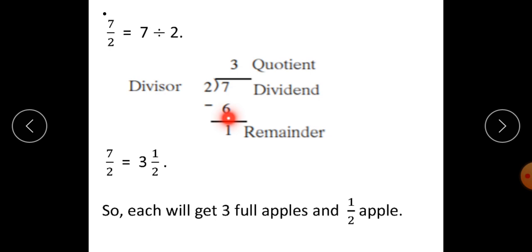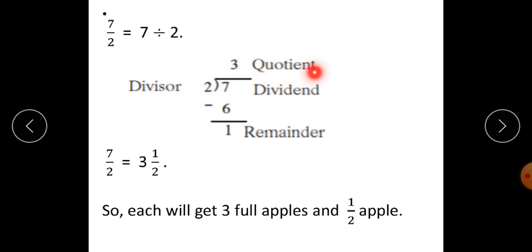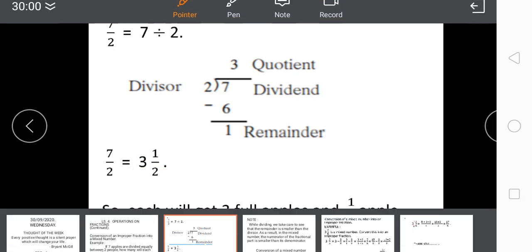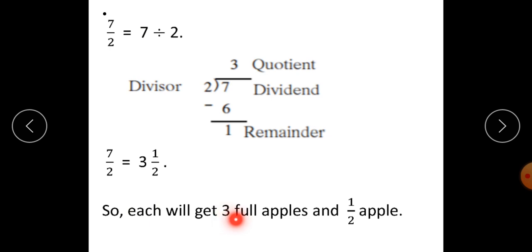2 threes are 6, and 7 minus 6 gives you 1. The number which we are going to divide — 7 — is called the dividend. The number by which we are dividing is called the divisor. The answer of the division is called the quotient, and the number left over is called the remainder. Therefore, 7 upon 2, which is an improper fraction, can be written as the mixed number 3½. So each person will get 3 full apples and 1 half apple.